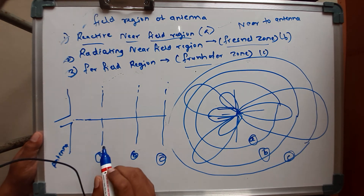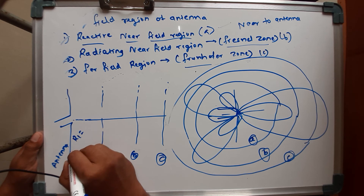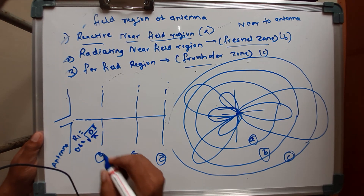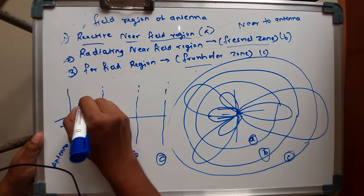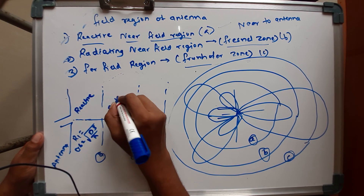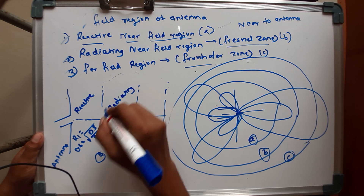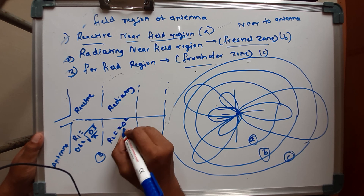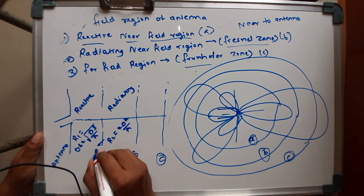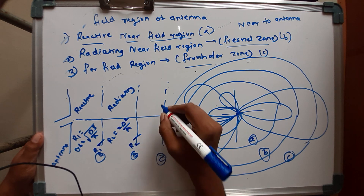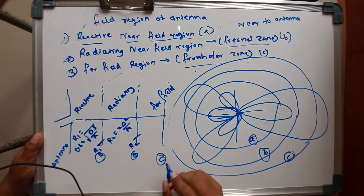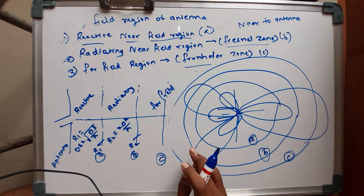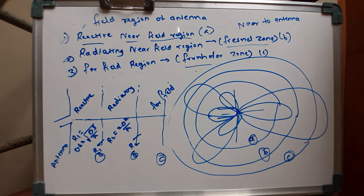To summarize: R1 equals 0.62 times the square root of D-cubed divided by lambda — this is the boundary of the reactive near field region. R2 equals D-squared divided by lambda — this is the boundary of the radiating near field region. Beyond R2 is the far field region, where distance does not depend on angular position. Today's lecture covered the reactive near field region, radiating near field region, and far field region. Thank you.